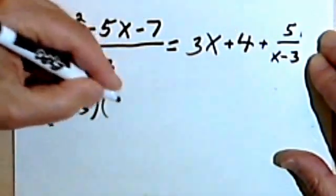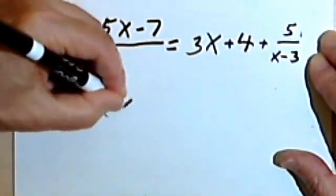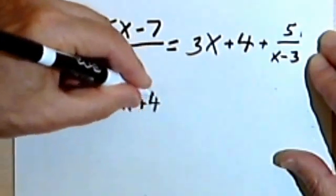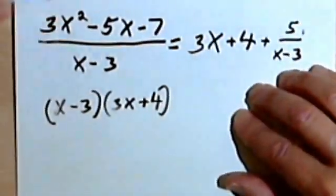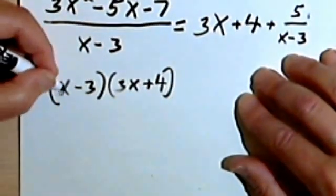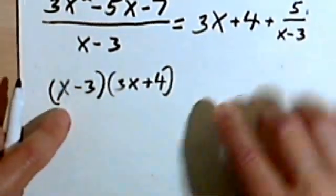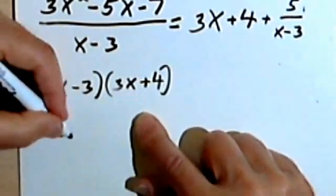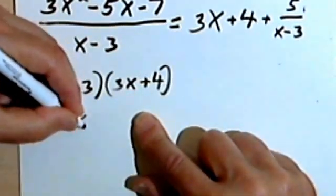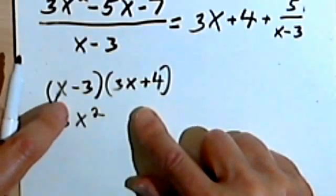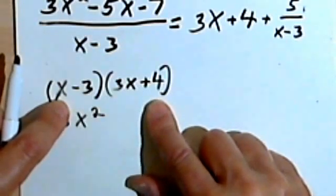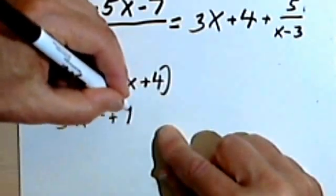So we're going to multiply that by 3x plus 4. And we'll get to the remainder in a second. So multiplying this, we multiply the first term times the first term, we get 3x squared. We multiply the outside terms, so we have x times 4 is 4x.